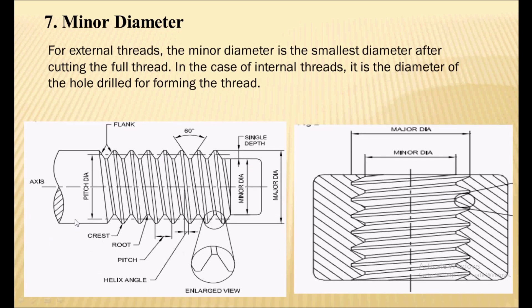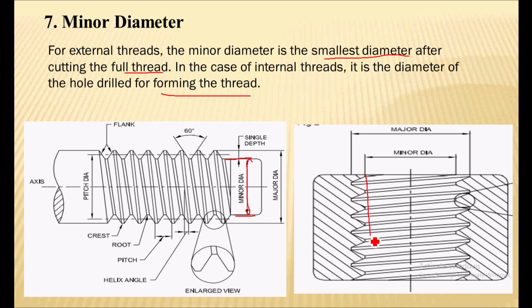Next is the minor diameter. For external thread, minor diameter is the smallest diameter after cutting the full thread. While in case of internal thread, it is the diameter of the hole drilled for forming the thread — the diameter of the hole on which threads are cut. This is called minor diameter in case of internal thread.